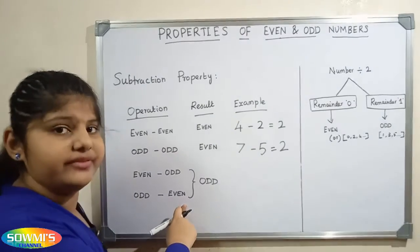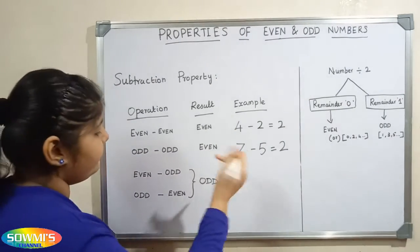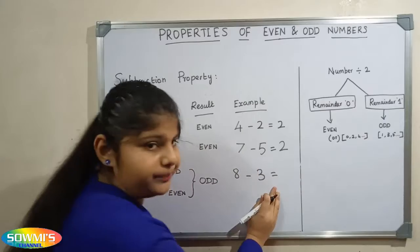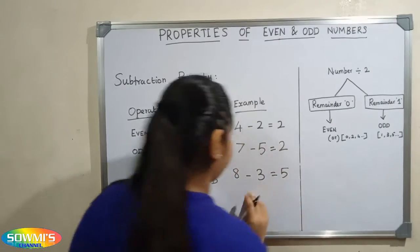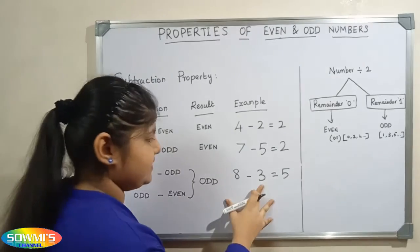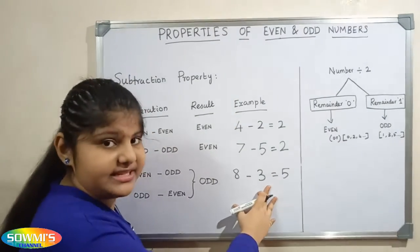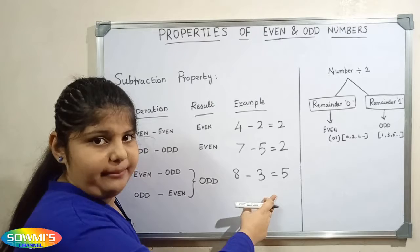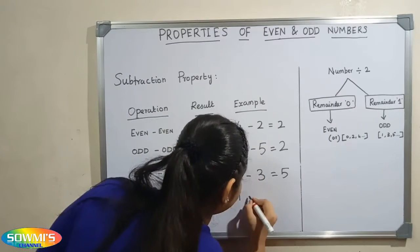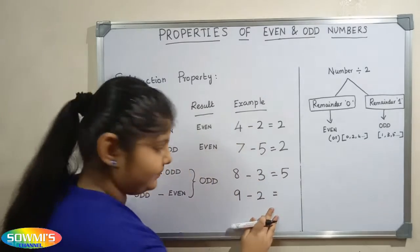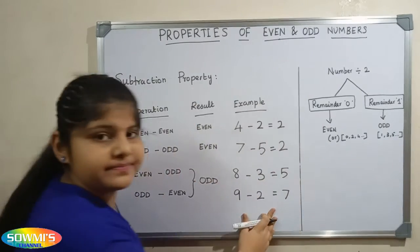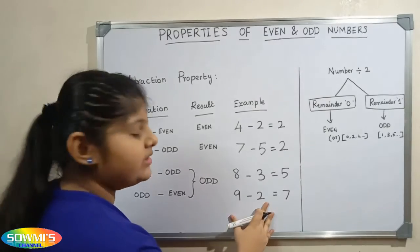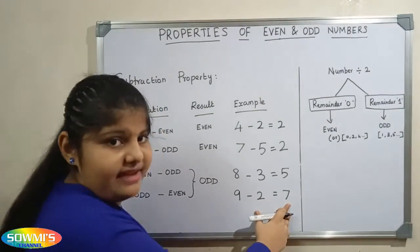When we subtract an even number from an odd number, or an odd number from an even number, we will get the result as an odd number. For example, 8 minus 3 is equal to 5. Here 8 is an even number and 3 is an odd number, and the result 5 is an odd number. Another example: 9 minus 2 is equal to 7. Here 9 is odd and 2 is even, and the result 7 is an odd number.